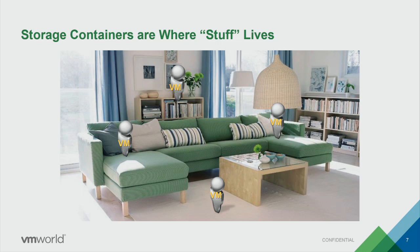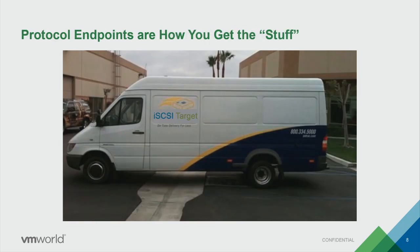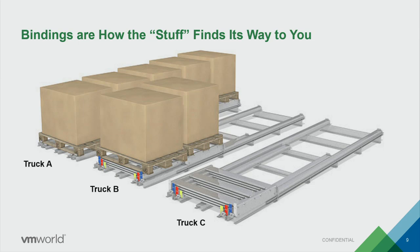Since the storage container is not the session endpoint anymore, the Protocol Endpoint is what shows up as an iSCSI target, an NFS mount point, or if you have legacy storage, a Fibre Channel port, and all connections go through that. A Protocol Endpoint can serve more than one storage container and can carry multiple different VVols. The way you associate a VVol with a Protocol Endpoint is called a binding — ESX asks the storage array for a VVol, and the array responds that it will be available at that Protocol Endpoint.